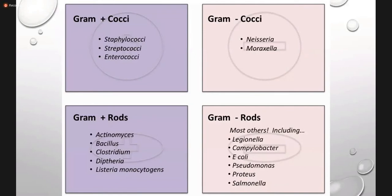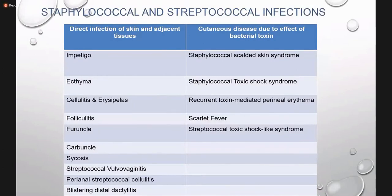In skin infection, gram positive and negative bacilli and cocci are very important. In gram positive we have staphylococci, streptococci, and enterococci — the most common bacteria causing skin diseases. Gram negative cocci are Neisseria and Moraxella. Gram positive rods are Actinomyces, Bacillus, Clostridium, and Diphtheria. Gram negative are E. coli, Pseudomonas, and Proteus. We will discuss only the gram positive cocci, as staphylococcal and streptococcal infections are the two most important bacteria causing skin disease.